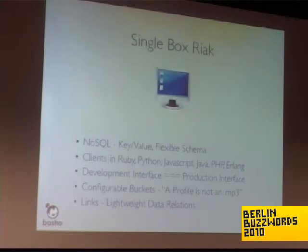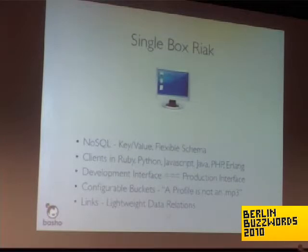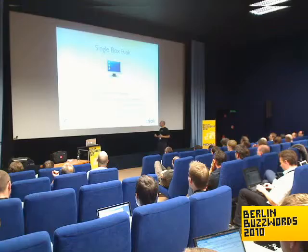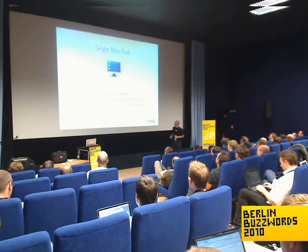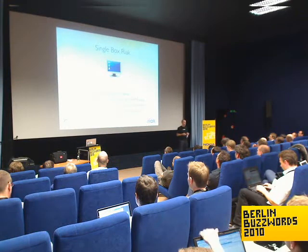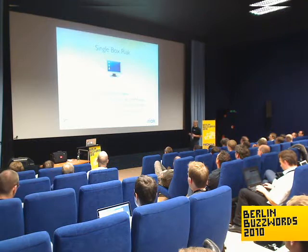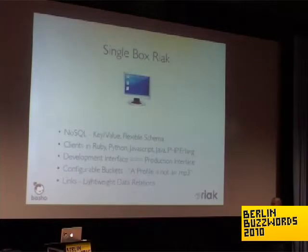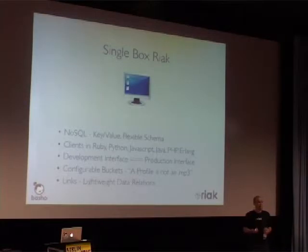On a single box of Riak, the story is simplicity. You get key-value access and query patterns, a flexible schema, and it's very simple to get up and running. There are clients in Ruby, Python, JavaScript, Java, PHP, and Erlang. It scales all the way down in that the developer interface is exactly equal to your production interface — so you can work on something installed locally and trust that when you deploy to production you'll get the exact same interface and behaviors.